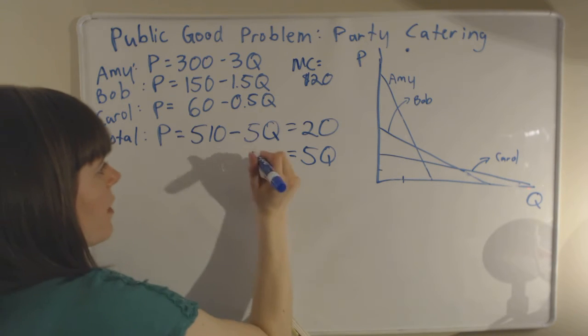Now, to figure out the optimal quantity, we're going to set our demand curve equal to the marginal cost, which is $20. And just solve for Q, so take 5Q over to the other side, subtract 20 from this side, you get 490. And this is going to tell us that the roommates should invite 98 guests at $20 per plate.